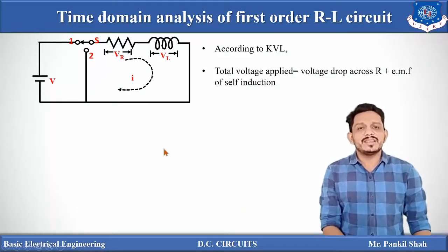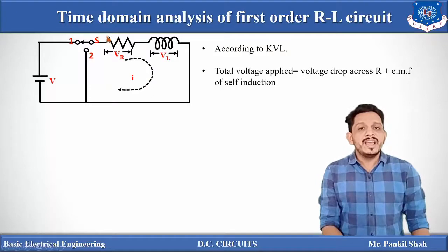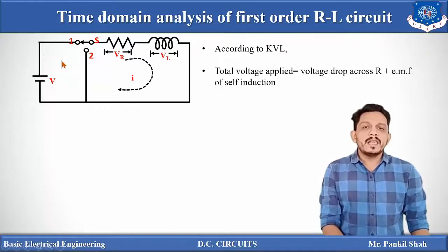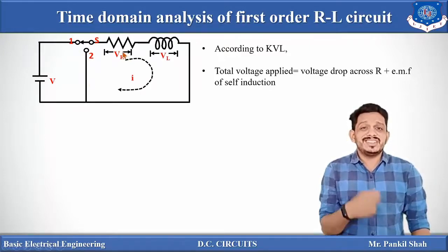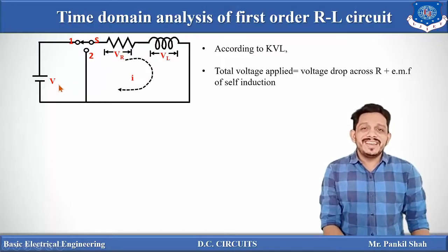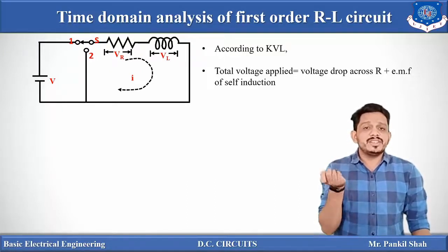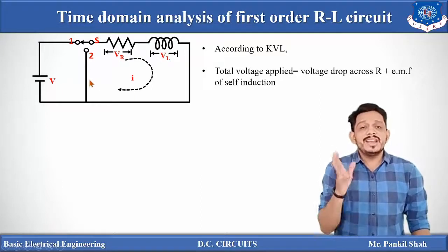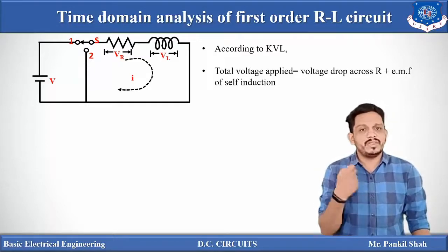This circuit is known as the RL circuit. In this circuit there is one inductor and one resistor connected in series, and this series combination is supplied via a DC battery voltage source V. There is also one switch that can be connected to terminal 1 or terminal 2. If the switch is connected to terminal 1, the supply voltage V is directly applied to this series RL combination and current starts flowing. Initially the inductor does not allow the full current to pass but allows it gradually, so we need to find the equation describing that delay.